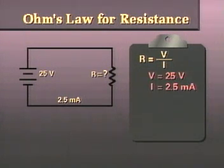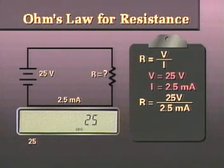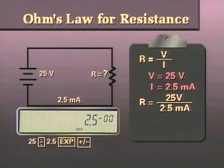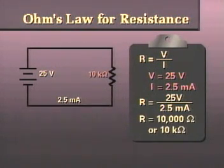Then we insert the values, which give us R equals 25 volts divided by 2.5 milliamps. On a calculator, we would key in 25 divided by 2.5 exponent chain sign 3 equals to get 10,000 ohms of resistance or 10 kilo ohms.